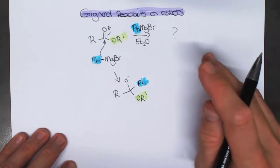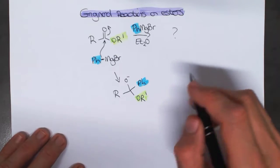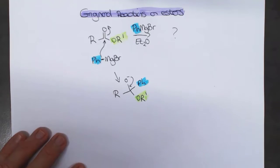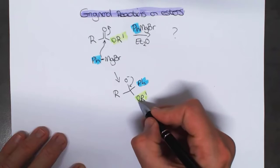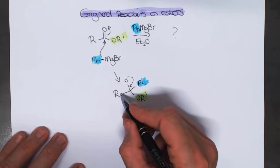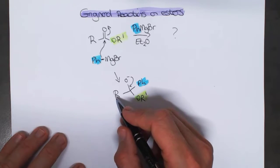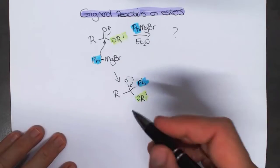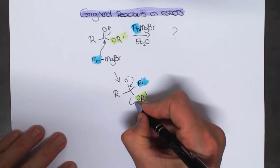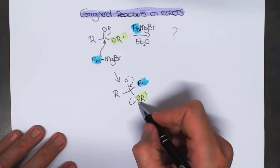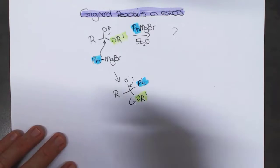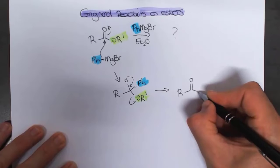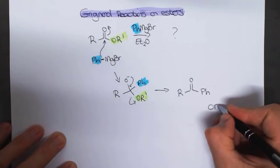At this point we've formed a tetrahedral intermediate, which we know is unstable, so it wants to collapse. The negative charge needs to come in and reform the carbonyl. We have to consider which bond is going to break. The carbon side would kick out a C-minus leaving group — that's not going to happen, it's a horrible high-pKa leaving group. The only option is to kick out the alkoxide, which has a pKa of around 16, and our product is the ketone plus OR-minus.